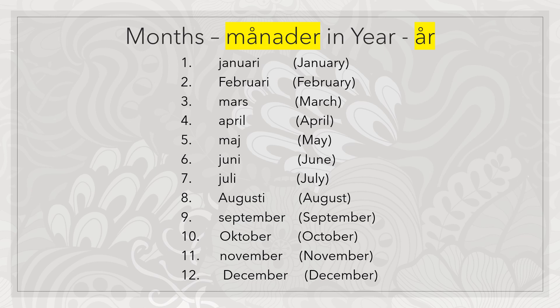Now months. Months are called månader and year is called år. Starting from number one: January, February, March, April, May, Juni, July, Augusti, September, Oktober, November, December.